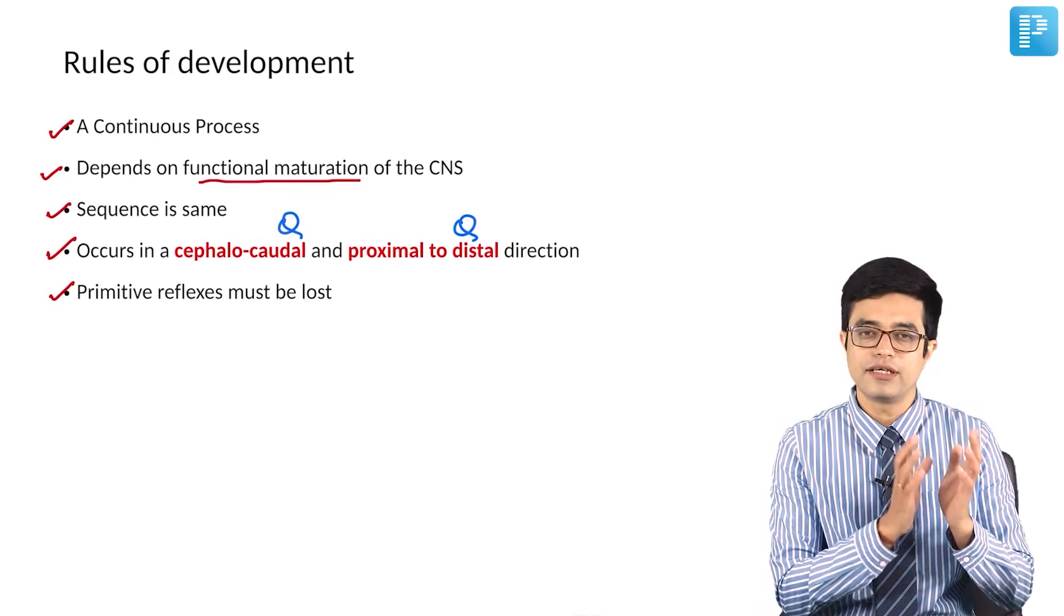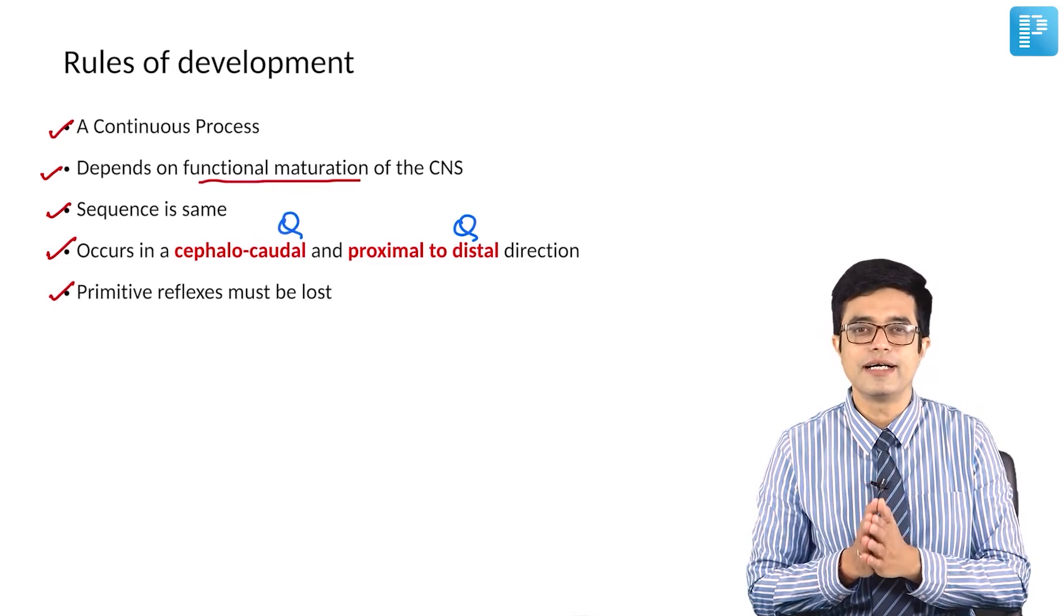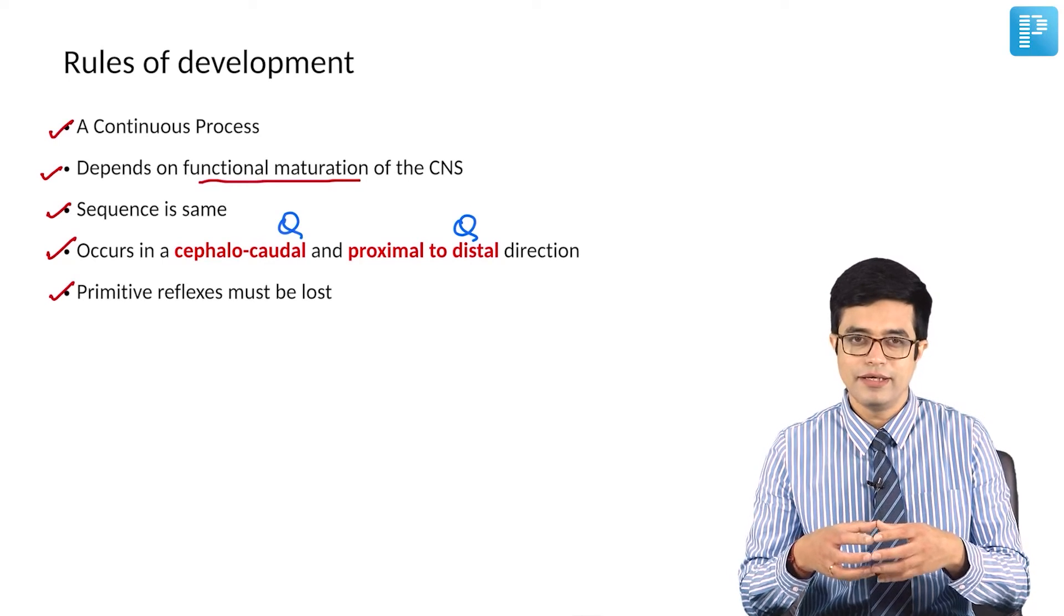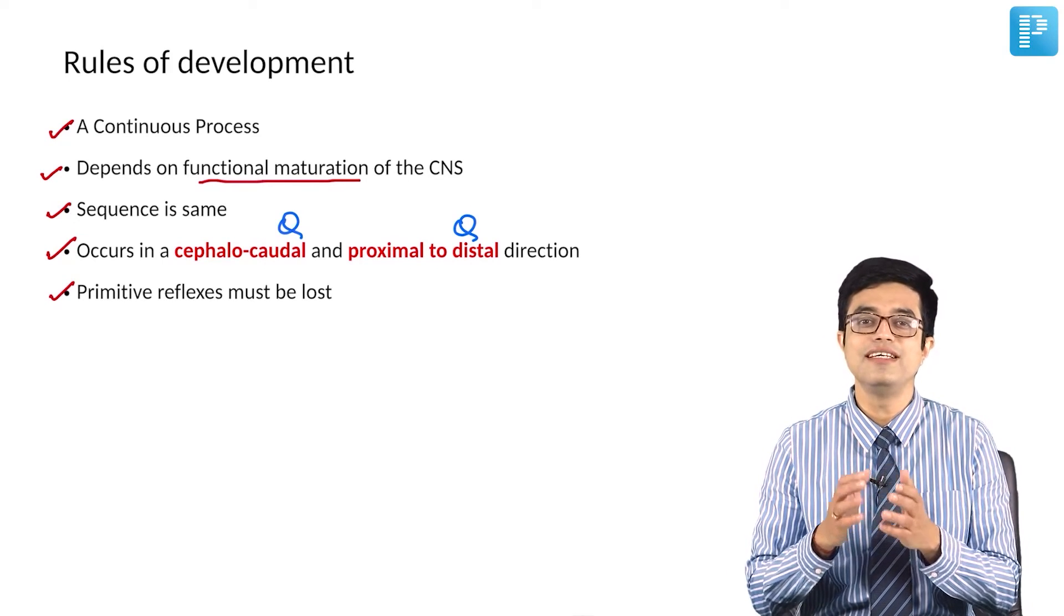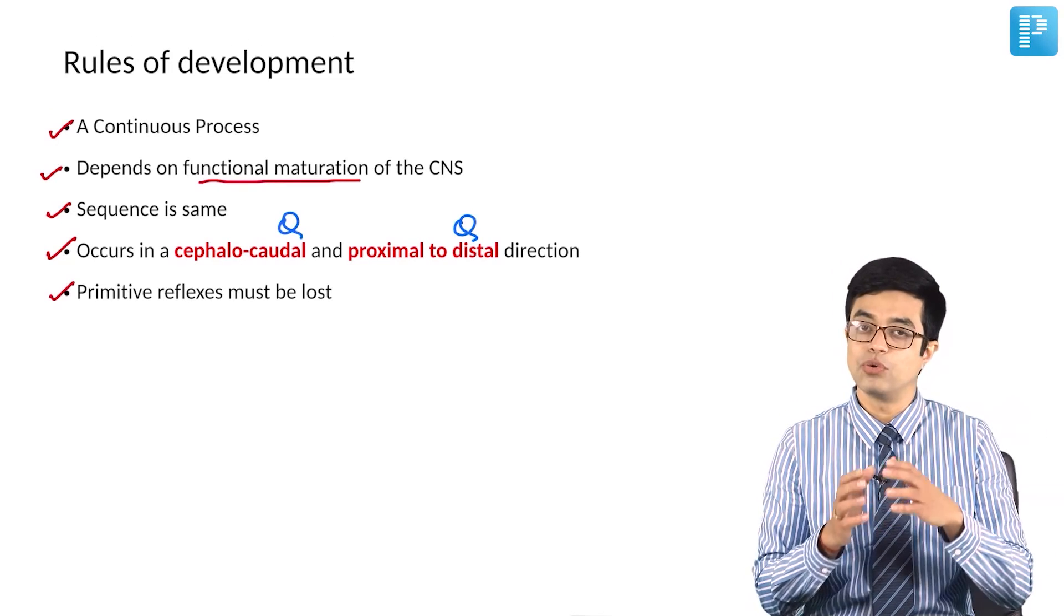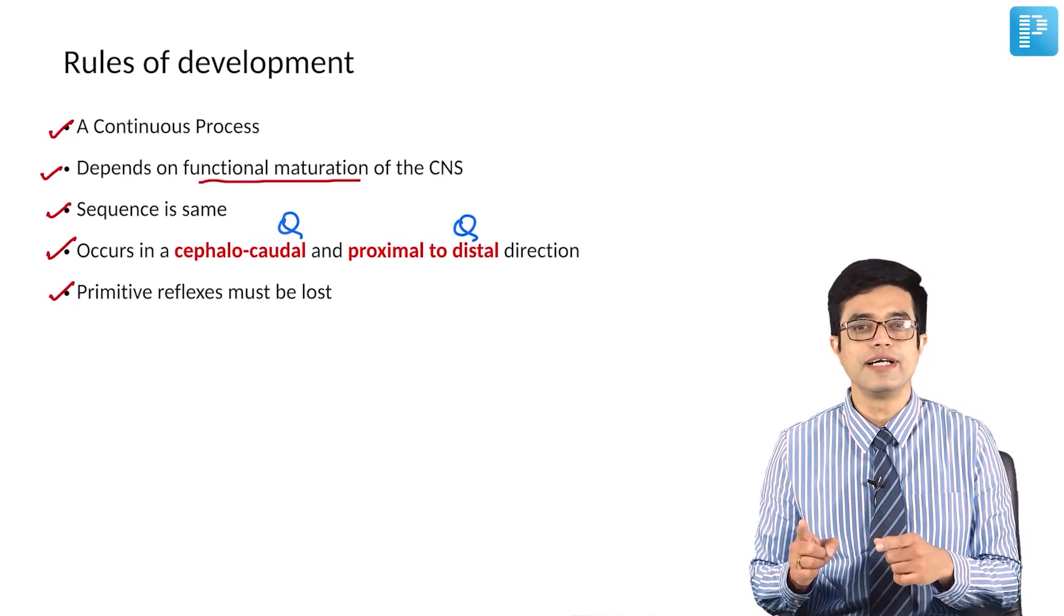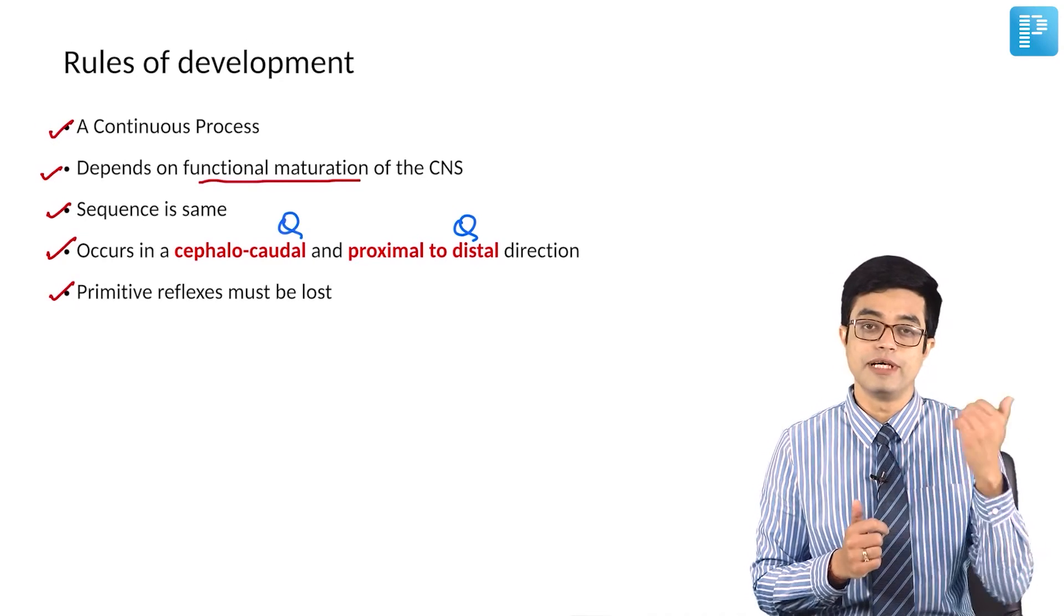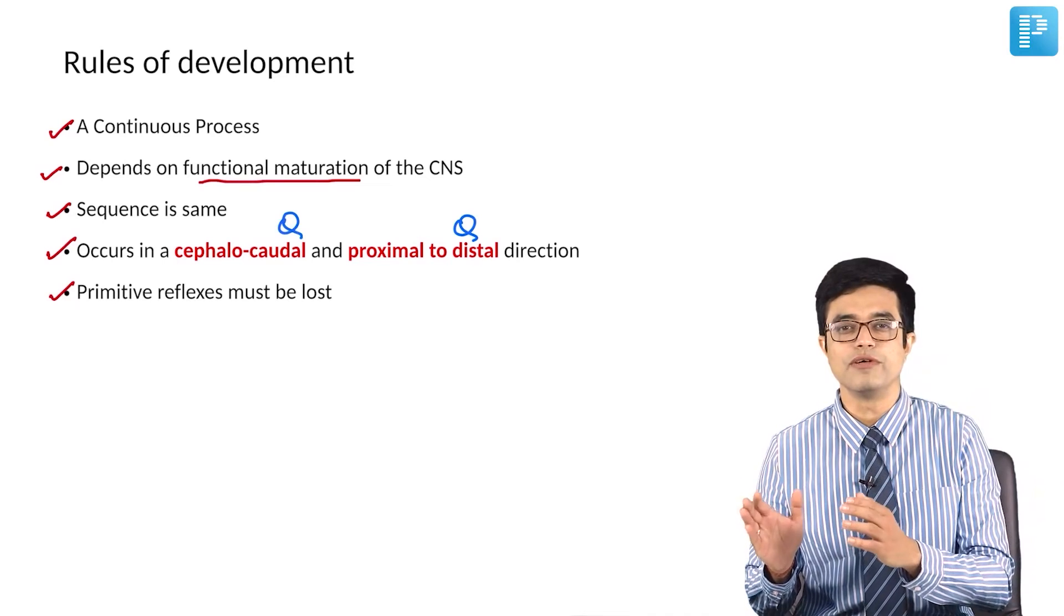In a newborn, in a term child, you know already that palmar grasp reflex is present. It is usually lost around three months of age. Some children lose it as late as four to five months. And only when it is lost, then you will find the palmar grasp, the voluntary palmar grasp comes into play. So primitive reflex has to go before a new reflex comes.